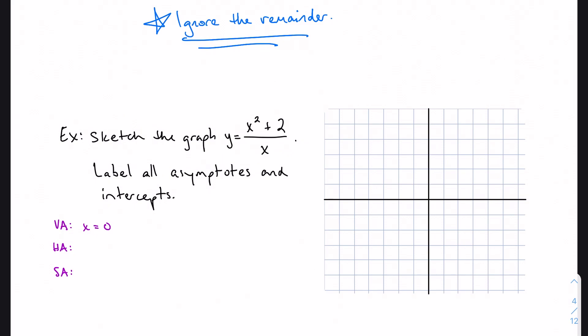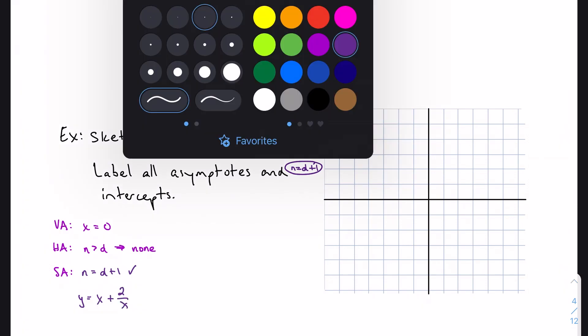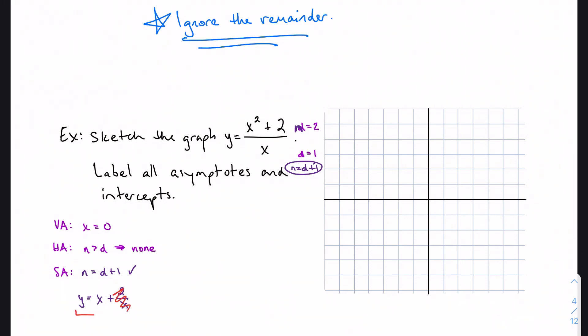Horizontal asymptotes - the degree is 2 here and the degree is 1 here. Numerator greater than denominator tells me there are none. You also notice that you do in fact satisfy this condition that n equals d plus 1. So because n equals d plus 1, let's divide through to find the equation of my slant asymptote. When I divide everything through, I'm going to get x plus 2 over x. Ignore the remainder. So this is the equation of my slant asymptote.